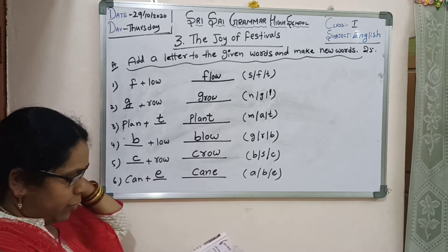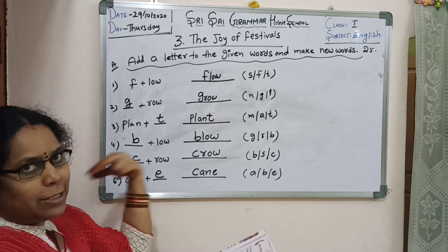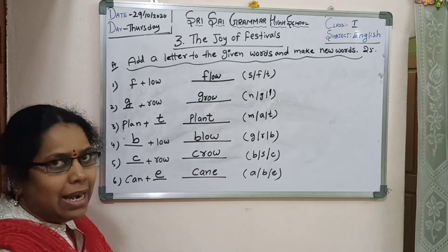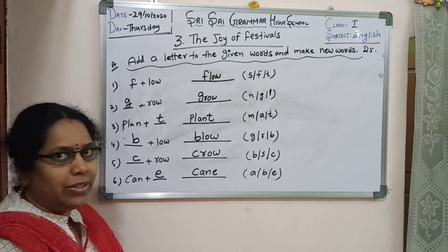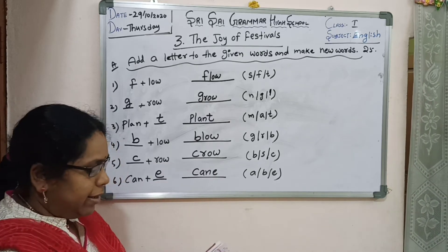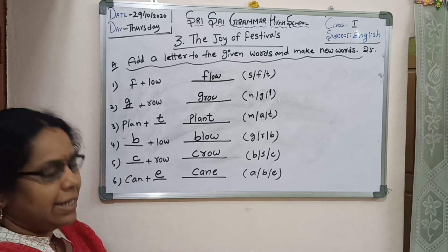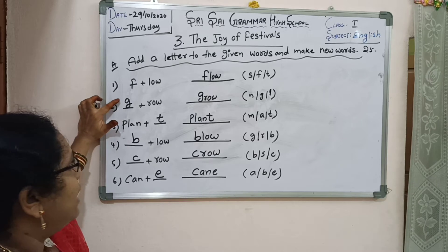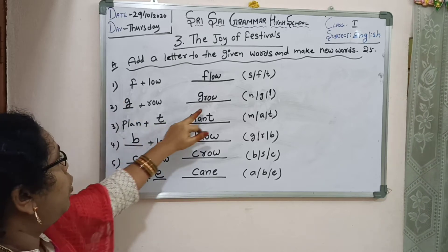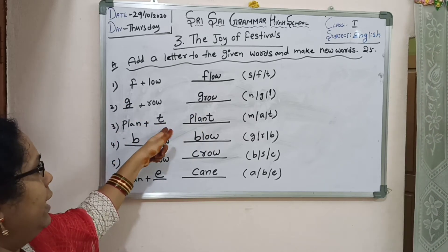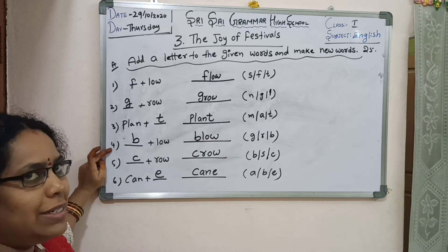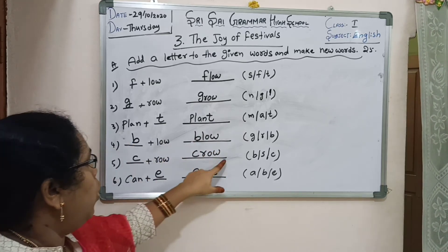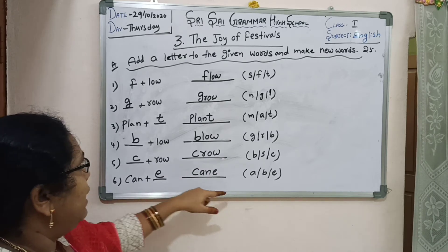Write in your textbook, page number 25. Walking stick — cane. First and second: add G at the starting — grow. Third: add T at the ending — plant. Fourth: add B at the starting — blow. Then crow. Then C-A-N-E, cane.